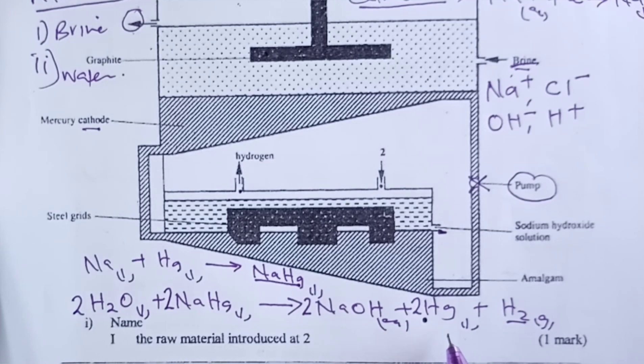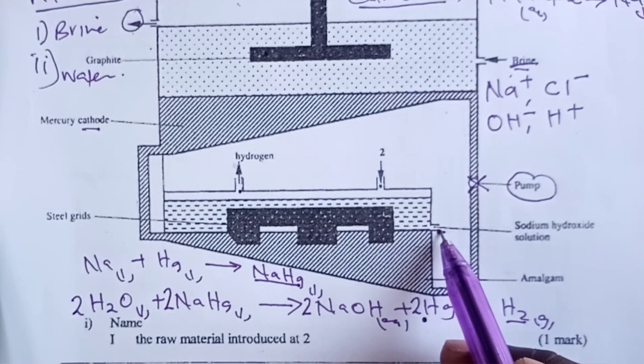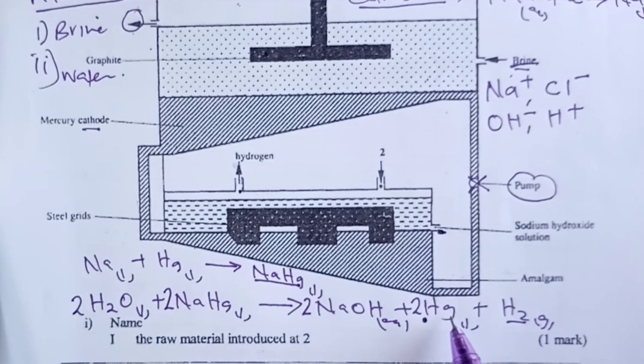I am being told that this cell is no longer in use because the sodium hydroxide obtained here tends to be contaminated. The cell has two disadvantages: one being that cost of mercury is high, and again mercury being a heavy metal is poisonous.